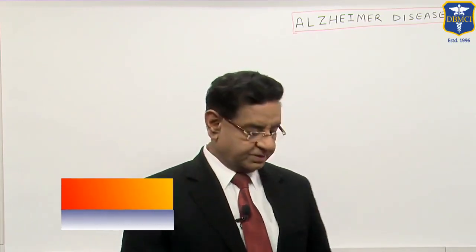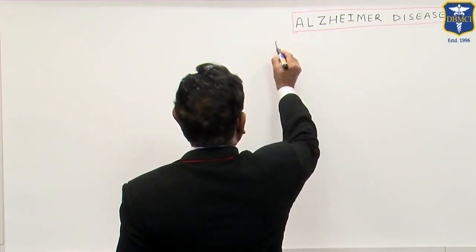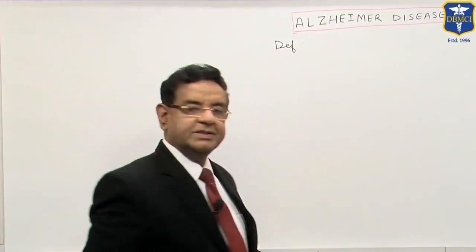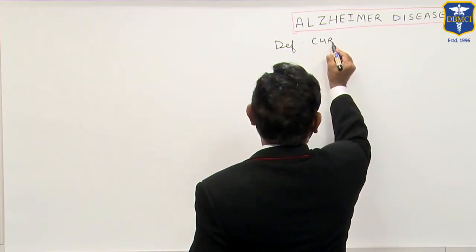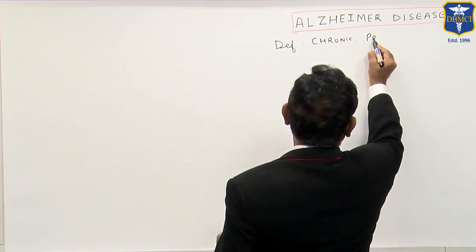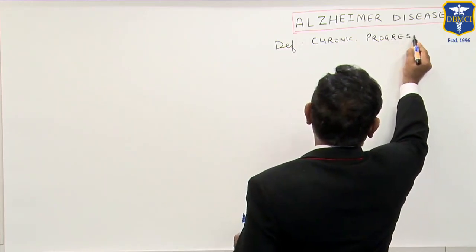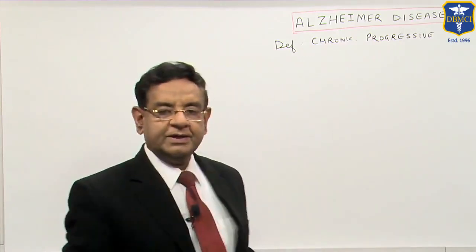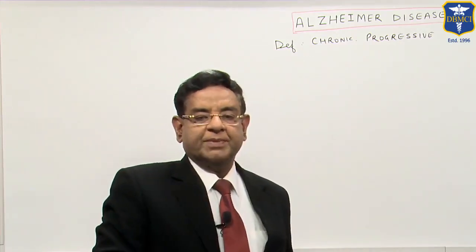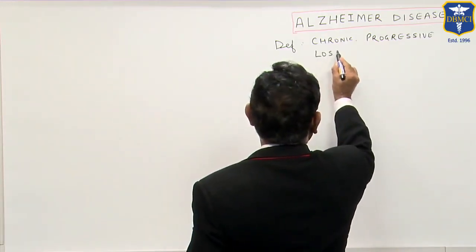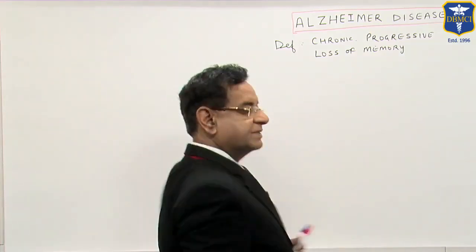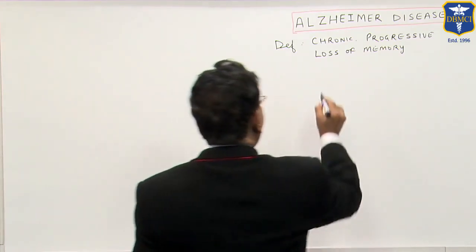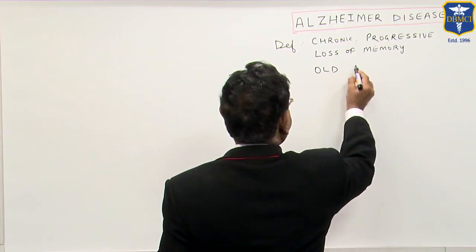Hello friends, now I will be talking to you about Alzheimer's disease. What is the disease? It is a chronic progressive disease and there is slowly loss of memory. This disease occurs exclusively in older people above the age of 60 years.